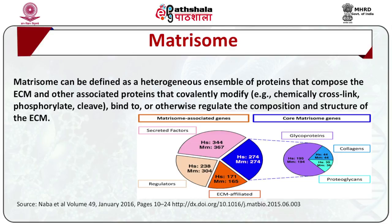The matrisome can be defined as a heterogeneous assemblage of proteins that compose the ECM and other associated proteins that covalently modify — for example, chemically cross-link, phosphorylate or cleave — bind to, or otherwise regulate the composition and structure of ECM.